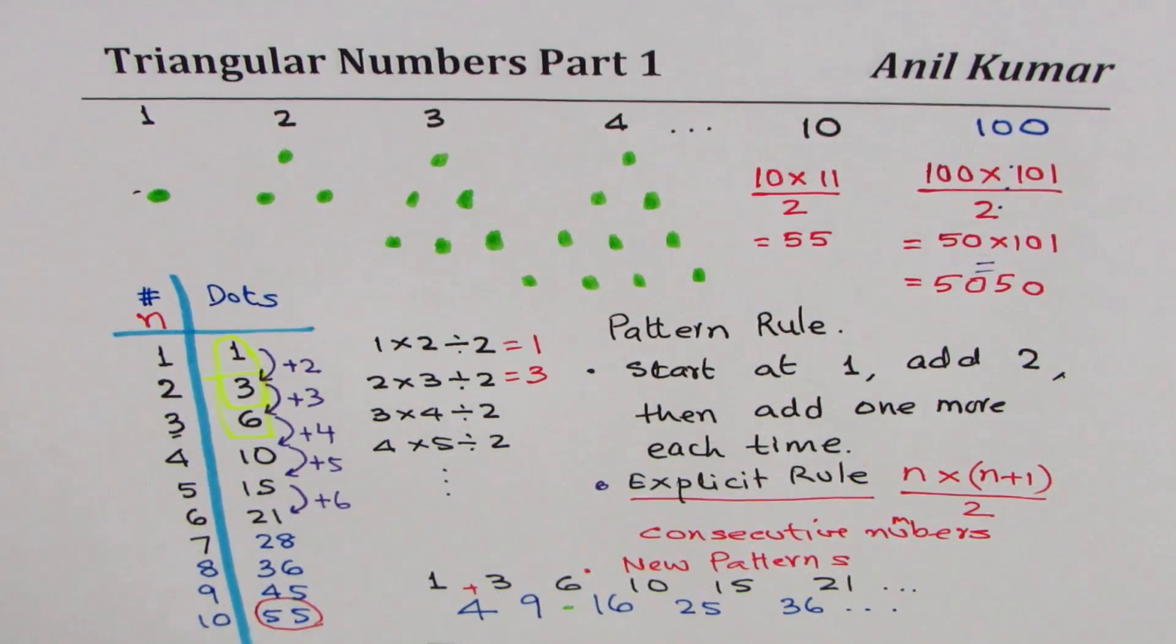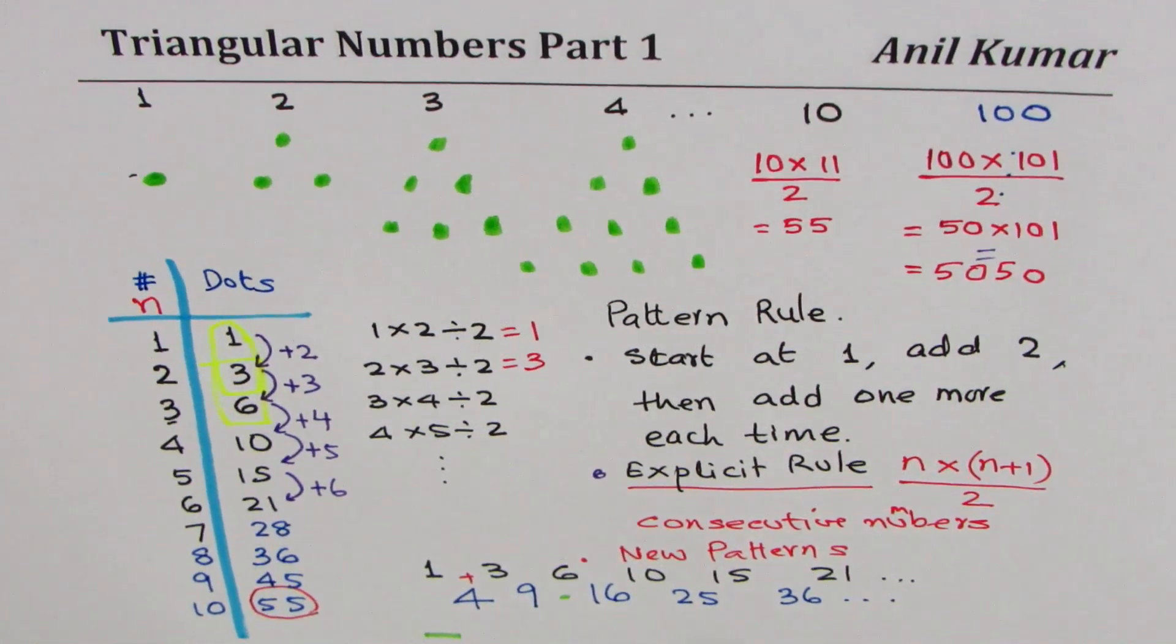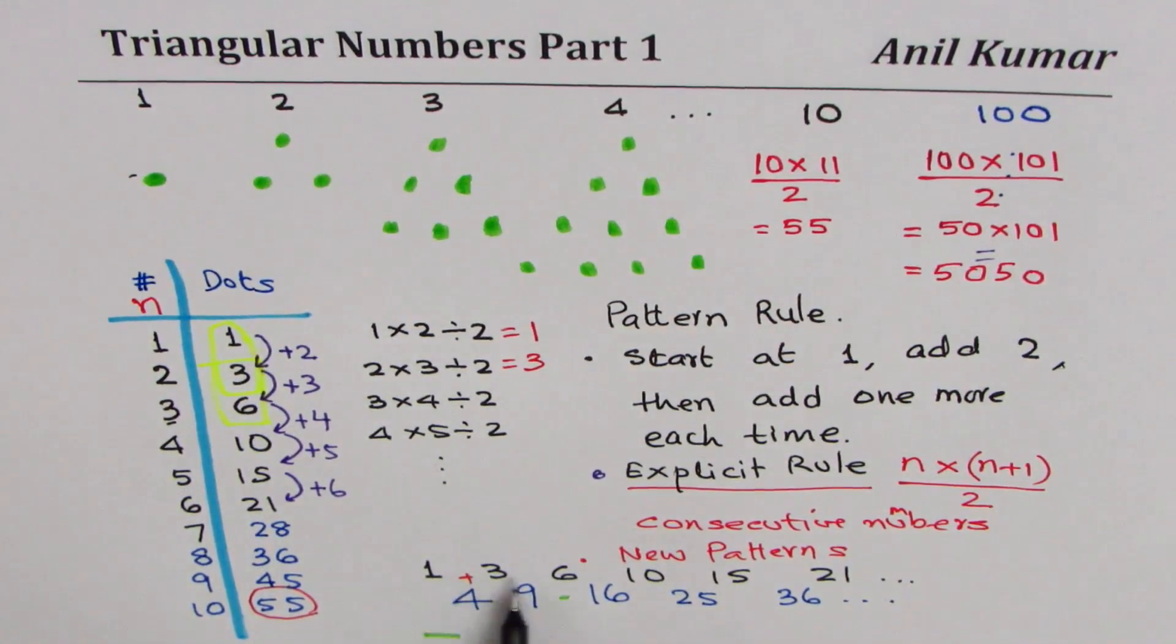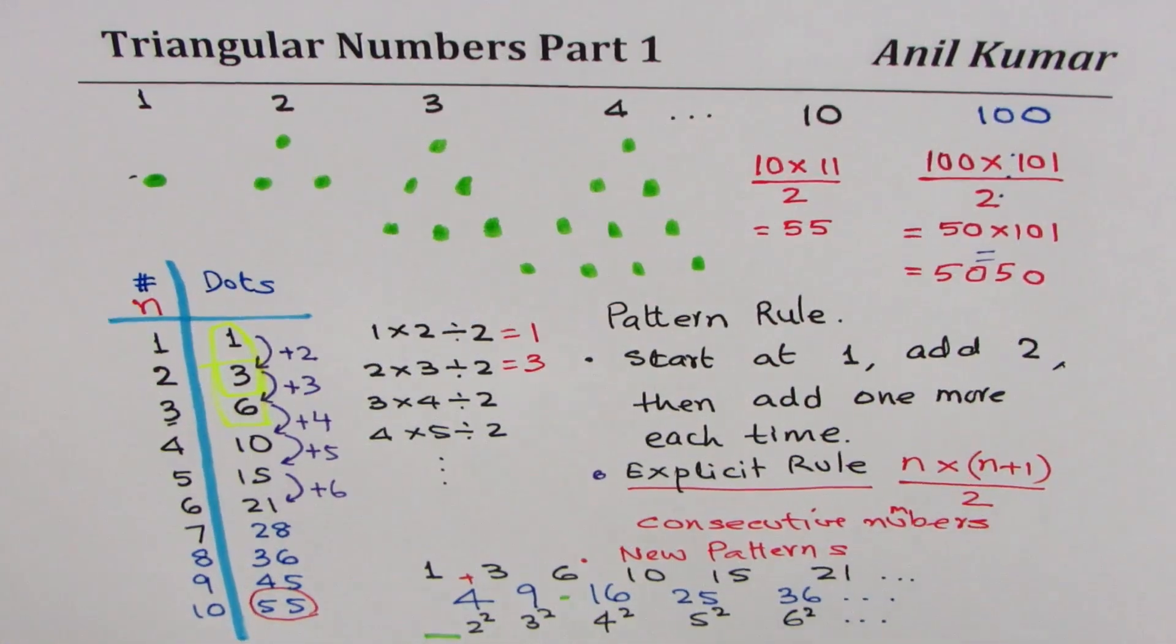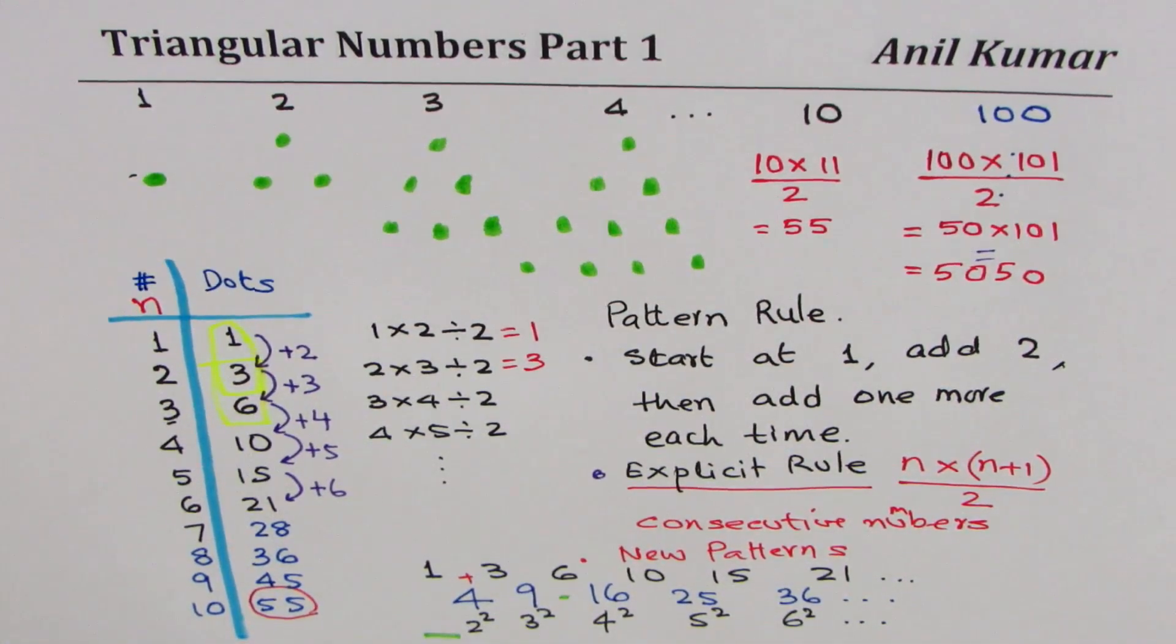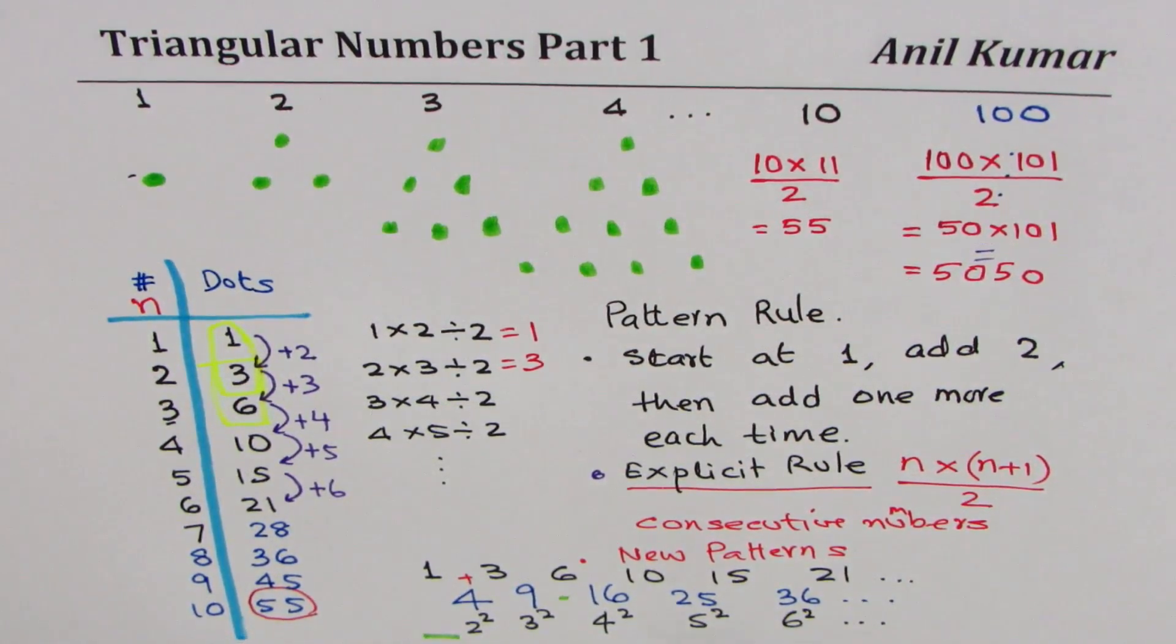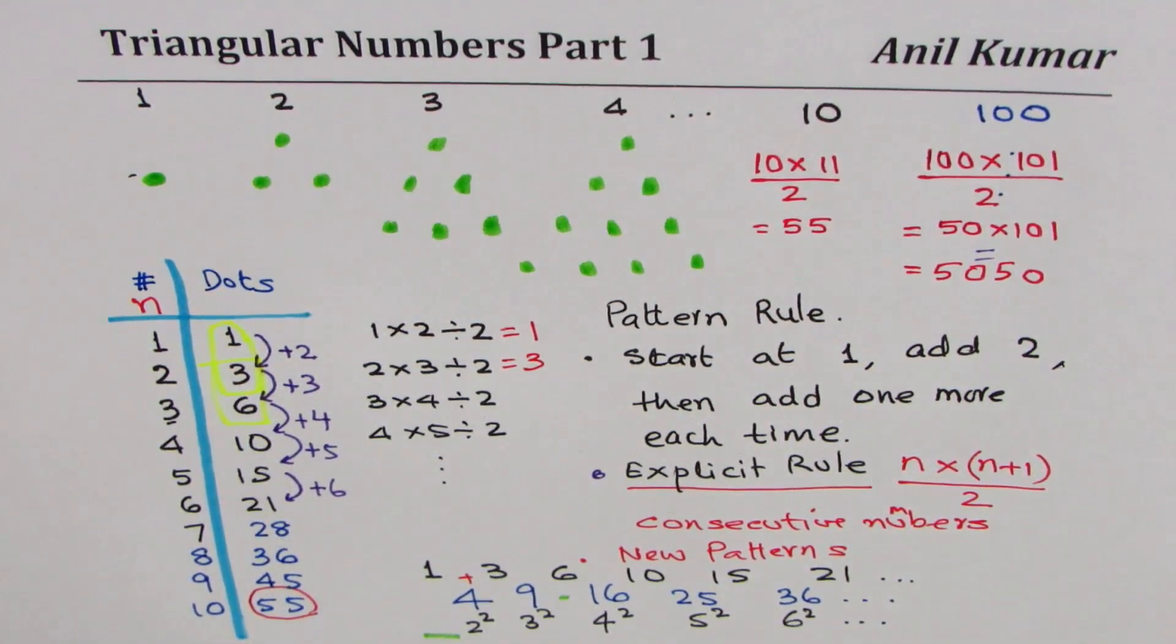These numbers, which you get by adding term numbers side by side, are perfect squares. So four is two square, nine is three square, 16 is four square, 25 is five square, 36 is six square, and so on. So you also see a pattern of squares, perfect squares, when you add two term numbers side by side. So that's kind of a very important rule or pattern which we observe in triangular numbers.